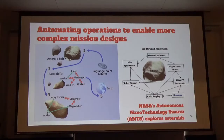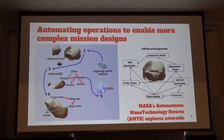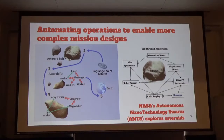Another reason why it matters is that it will allow us to design missions with more complex operation schemes. One NASA mission on their website involves sending swarms of satellites to an asteroid. The communications latency between the asteroid and Earth is quite large, so making real-time decisions on directing these microsatellites requires autonomous functionality, and machine learning supports that.